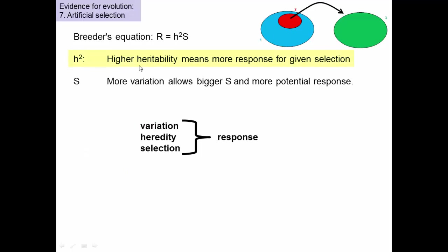Given this, a higher heritability means more response given a certain amount of selection. The bigger this is, the more the response. Second, more variation allows you to have a bigger selection differential and gets you a larger potential response. And so this breeder's equation is useful because it highlights the three things required to get a response: the variation, the heredity of that variation, and the selection that we impose.